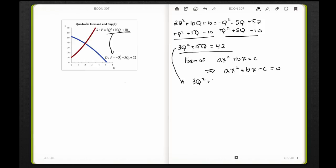I've got 3q² + 15q - 42 = 0. This is the equation I'm going to use. It's in that ax² + bx + c form. So I can say that a = 3, b = 15, and c = -42. Let's use the quadratic formula to solve for this.